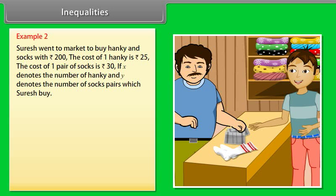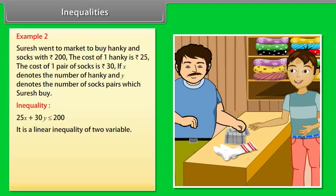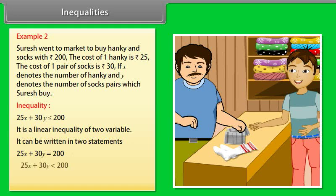Example 2: Suresh went to the market to buy a hanky and socks with rupees 200. The cost of one hanky is rupees 25 and the cost of one pair of socks is rupees 30. If x denotes the number of sock pairs which Suresh buys, we can represent the statement in inequality form as 25x + 30y ≤ 200. It is a linear inequality of two variables. It can be written in two statements: 25x + 30y = 200, or 25x + 30y < 200. Name statement A as an equality in this case.